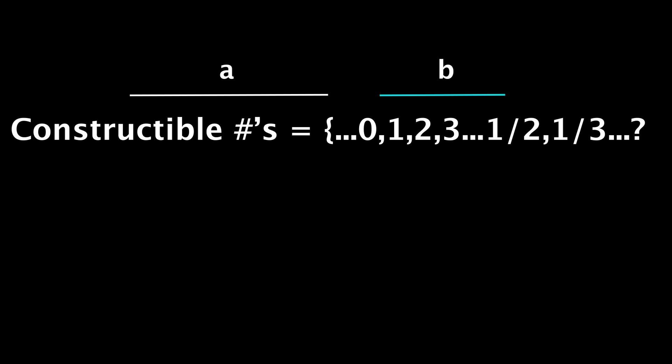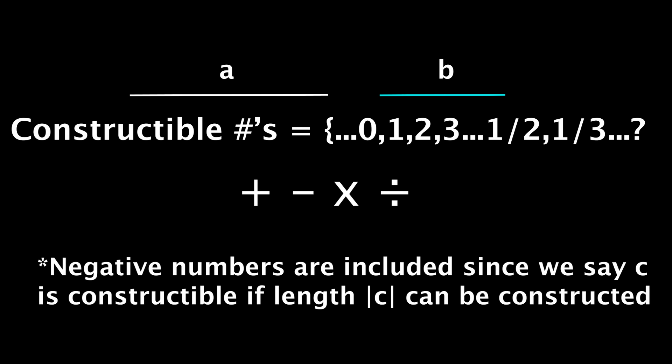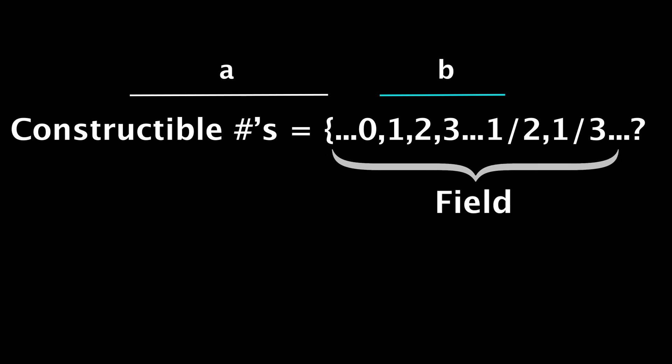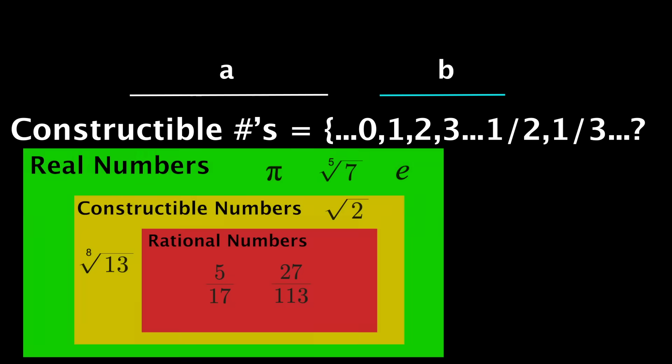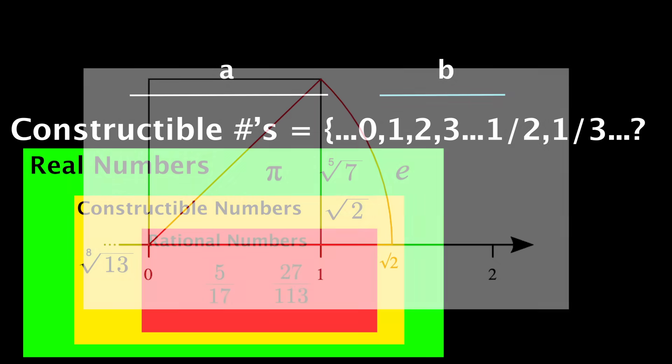But how far can we take this? Like is root seven or pi squared constructible? Well, whatever the set of constructible numbers is, we don't know at first, we do know that take any two, you can apply these four operations and get something else in the set. Thus, the set of constructible numbers is a field. More specifically, it's a field that includes all rational numbers, but I will say, not all real numbers. Pi is not constructible, but root two is, as such.